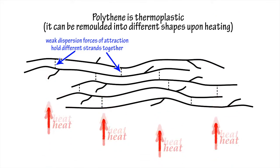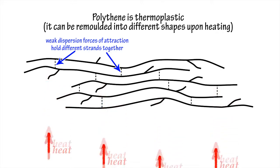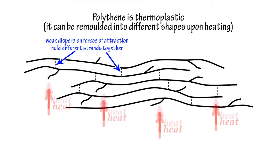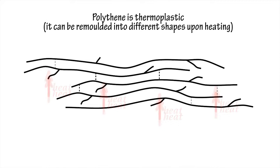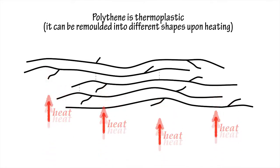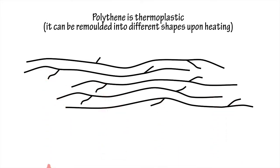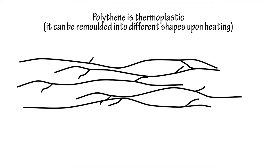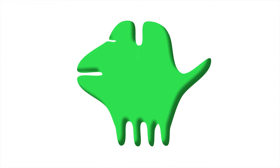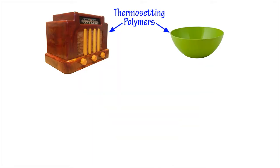Polythene is thermoplastic. It softens upon heating, as the weak intermolecular dispersion forces holding the different polymer strands together in the solid break, allowing the strands to slide over one another, resulting in a material that can be remoulded into different shapes.